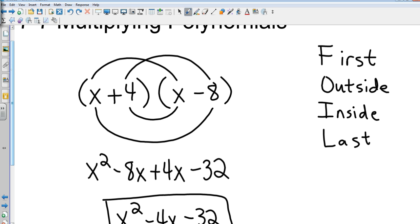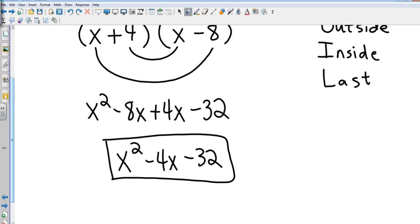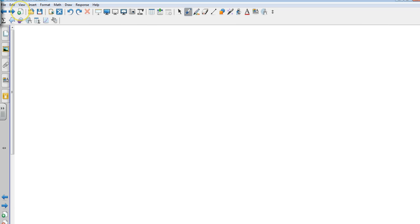Okay, again, first, outside, inside, last. I have a good friend that teaches this and she teaches the smiley man method. If you look at when I've drawn those, it kind of looks like a smiley face. And so (x+4) times (x-8), after I've combined the like terms, gives me x² - 4x - 32.